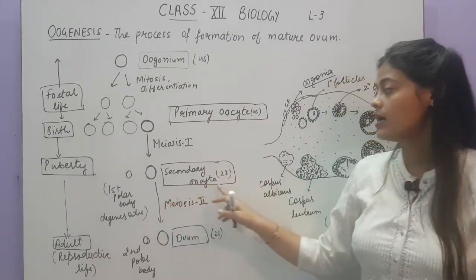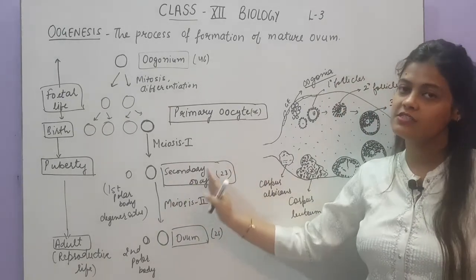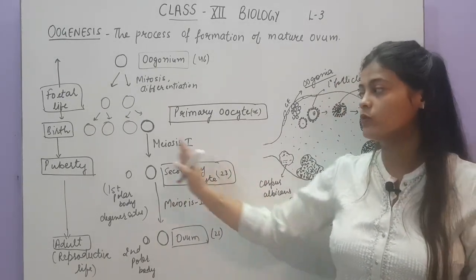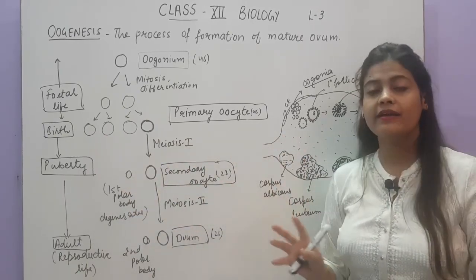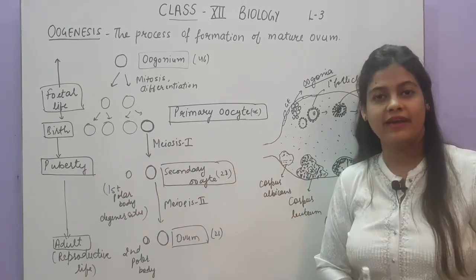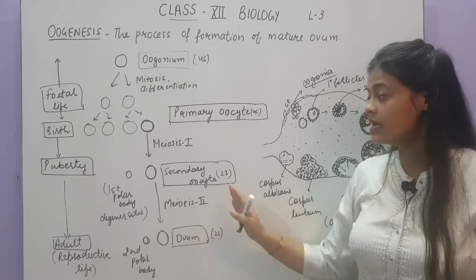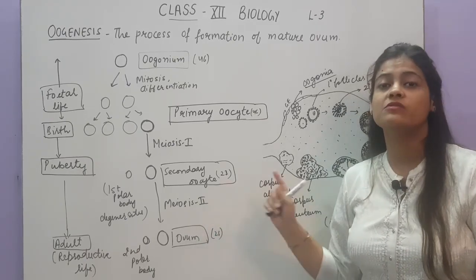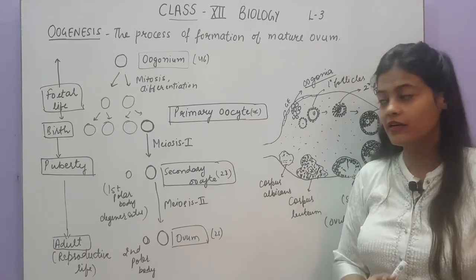This secondary oocyte will be arrested at this stage only. After the secondary oocyte is developed at the time of puberty, the secondary oocyte stage will be retained — further development will not take place until fertilization occurs.